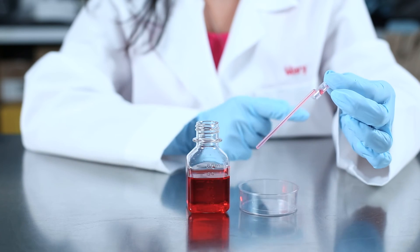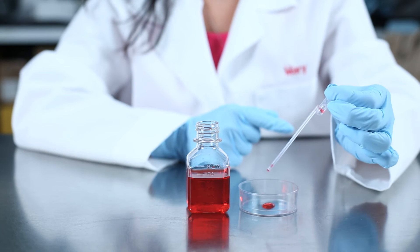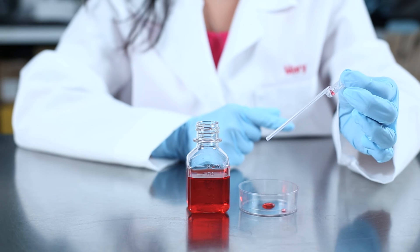The top bulb is used to draw and dispense liquid. The bottom bulb works as a reservoir to hold any excess liquid and ensure an exact volume is dispensed.